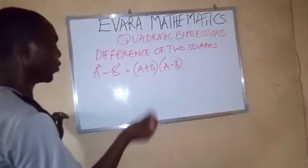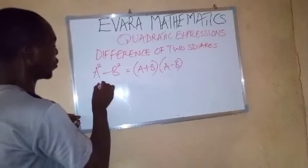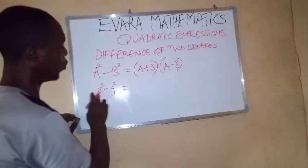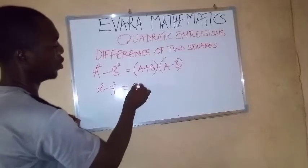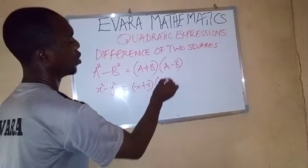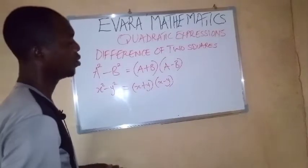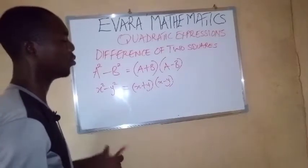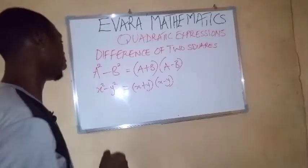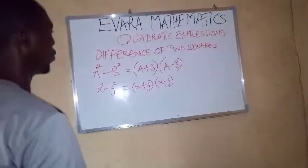So if you have, for instance, x squared minus y squared. To factorize this now, it will be x plus y, x minus y. So difference of two squares are simple as this. We are going to take some few examples under difference of two squares.